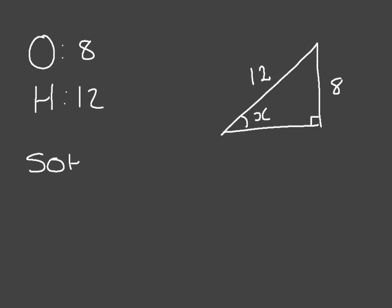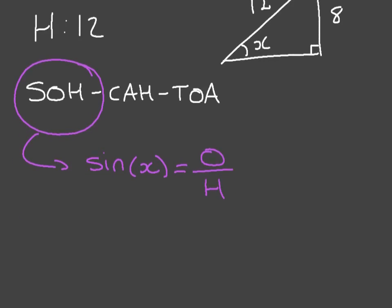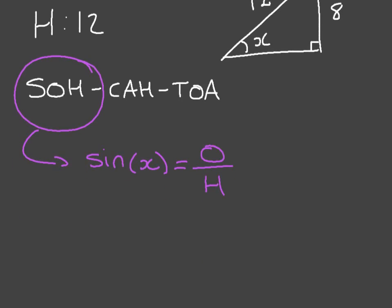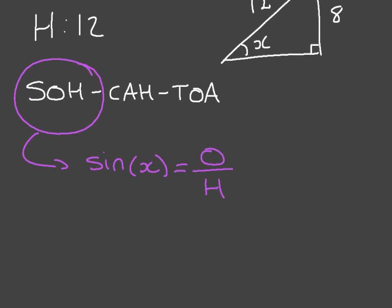As always, we use SOHCAHTOA, and we look for which of these three words has both O and H inside it. It's the first one — SOH — which tells us that the sine of the angle we're interested in, which in this case is x, is equal to the opposite divided by the hypotenuse. Since the opposite is 8 and the hypotenuse is 12, sine of x is equal to 8 divided by 12.